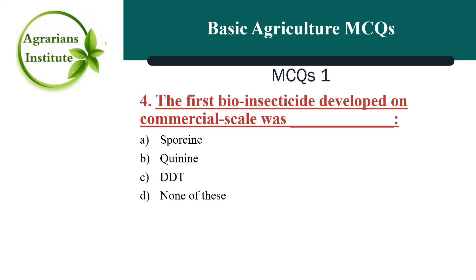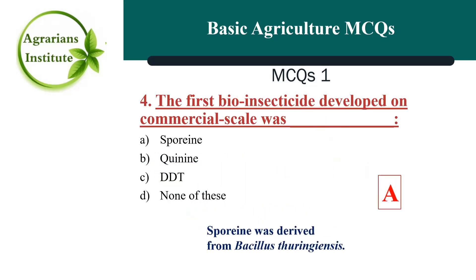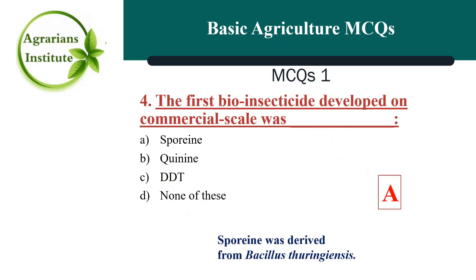Next MCQ: The first bio insecticide developed on a commercial scale was — the correct answer is A, Sporine. Sporine was derived from Bacillus thuringiensis.